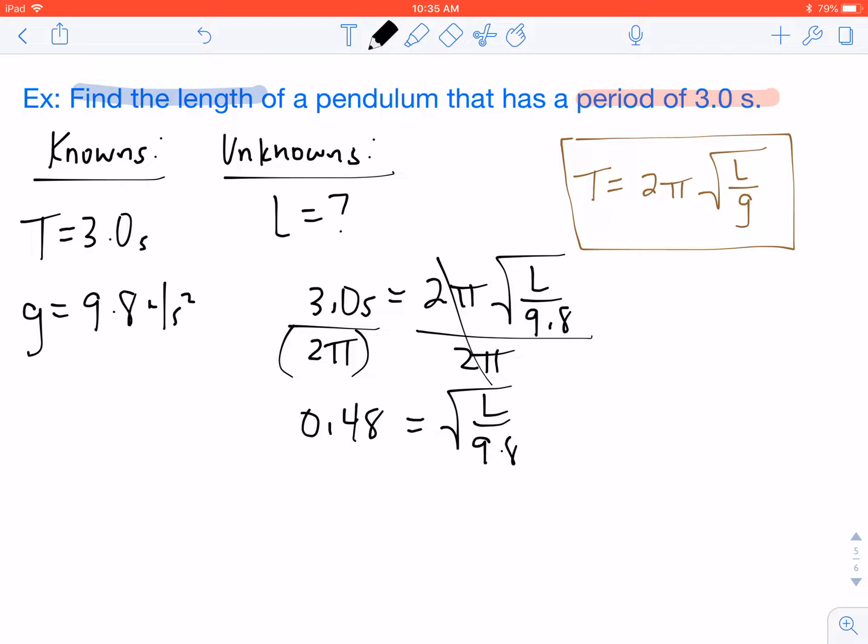So our next algebraic move is to get rid of the square root on the right side. And to get rid of a square root, we must square. And so what you do on one side, you have to do to both sides. So we are going to square both sides to get rid of that square root. So 0.48 squared equals 0.23. So 0.23 is going to equal L over 9.8.